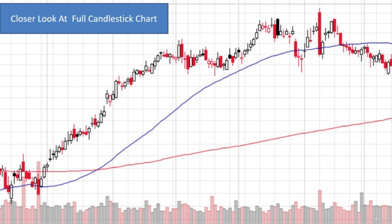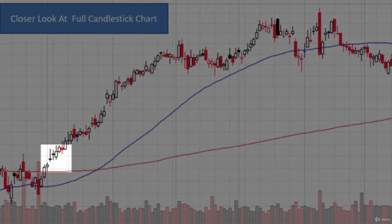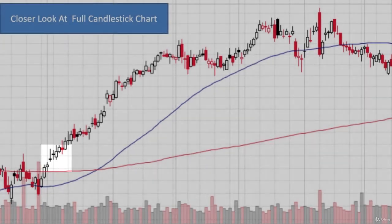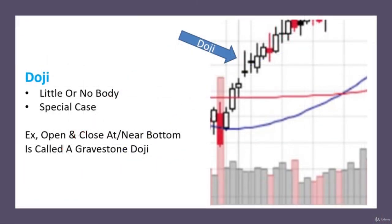See how some are really short and squat, and some are real long. Some have real long wicks at the top. Some have no wicks at the top or very little and long wicks at the bottom. In fact, you can see these ones here over on the far left. You might see a candlestick that has a very long top but not much difference between open and close, has a very small, almost like a line across for a body. That's actually called a doji. There's actually things we trade around that. It's a candlestick with little or no body, and it's a special case. It's where the open and close are occurring at or near the bottom. If it happens near the bottom, it's called a gravestone doji.